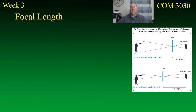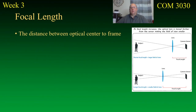Let's talk first about focal length. Focal length is basically the angle of what the camera sees — what the lens allows you to see. It's defined as the distance between the optical center of the lens and the camera frame. If you look at this illustration, from that lens there's a camera sensor or a piece of film, and however far away that lens is from the sensor is referred to as the focal length.